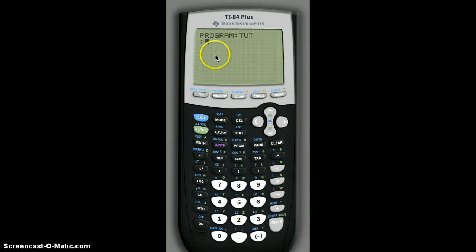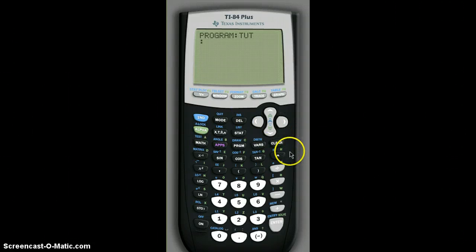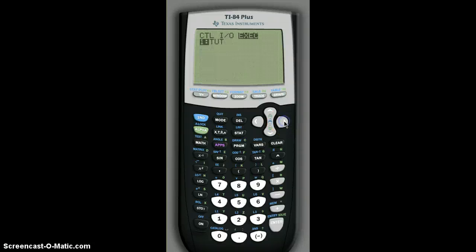And then it comes up with this programming layout with the first line and a blinking cursor. To find all the commands, you're going to want to click program again. This will bring up a bunch of different commands that you can use in the program.